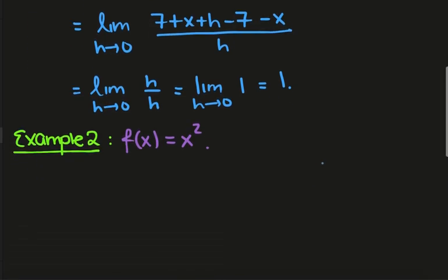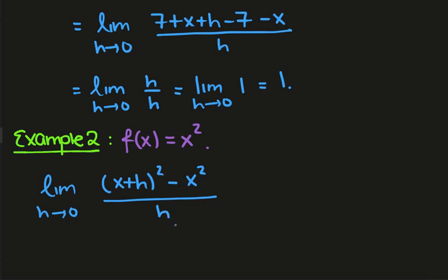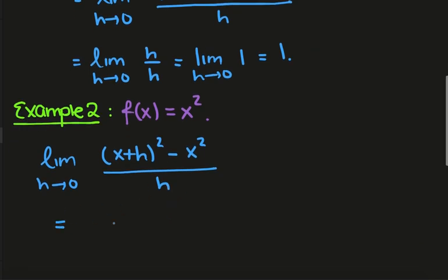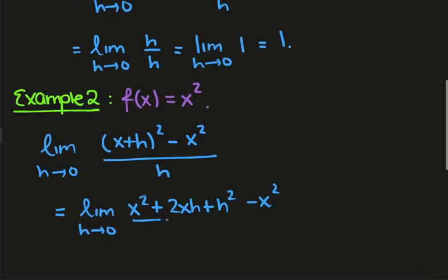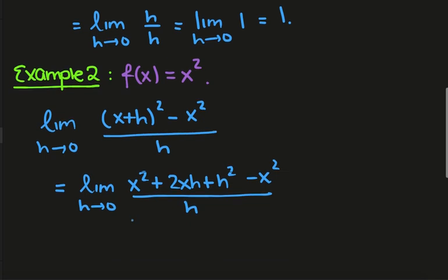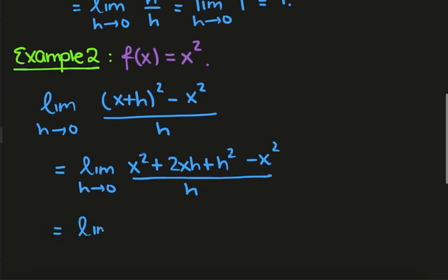Let's look at a slightly more complicated example with f of x equals x squared. We put this in the formula as before: f of x plus h is x plus h squared, f of x is x squared, and we divide by h. We expand x plus h squared to get x squared plus 2xh plus h squared minus x squared, all divided by h.